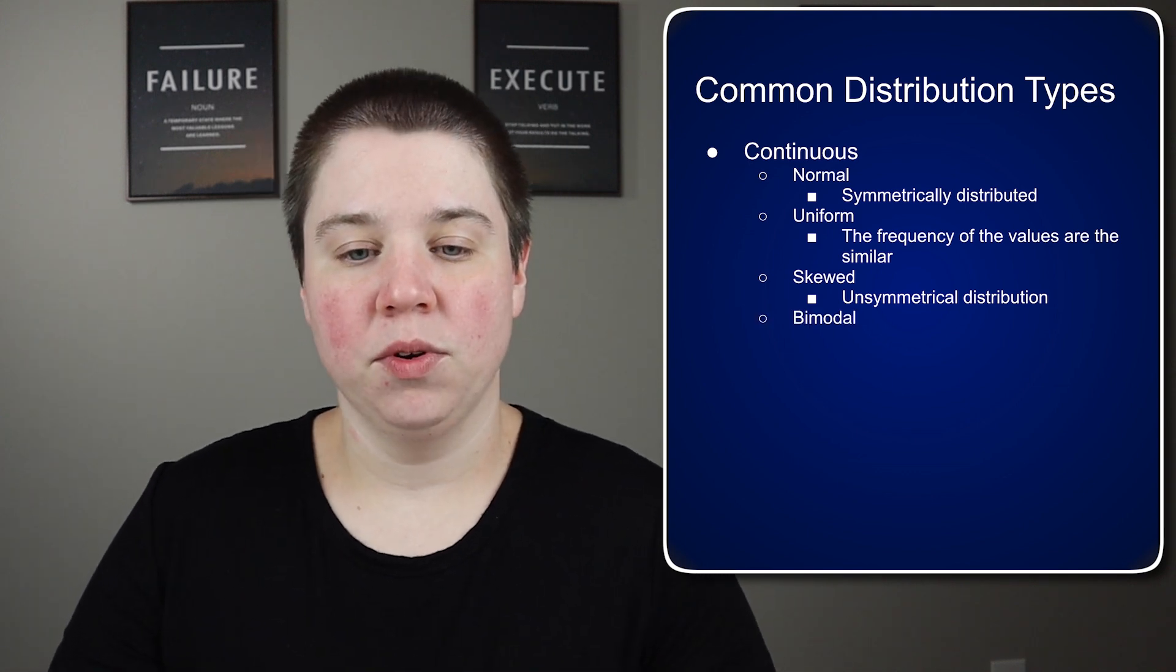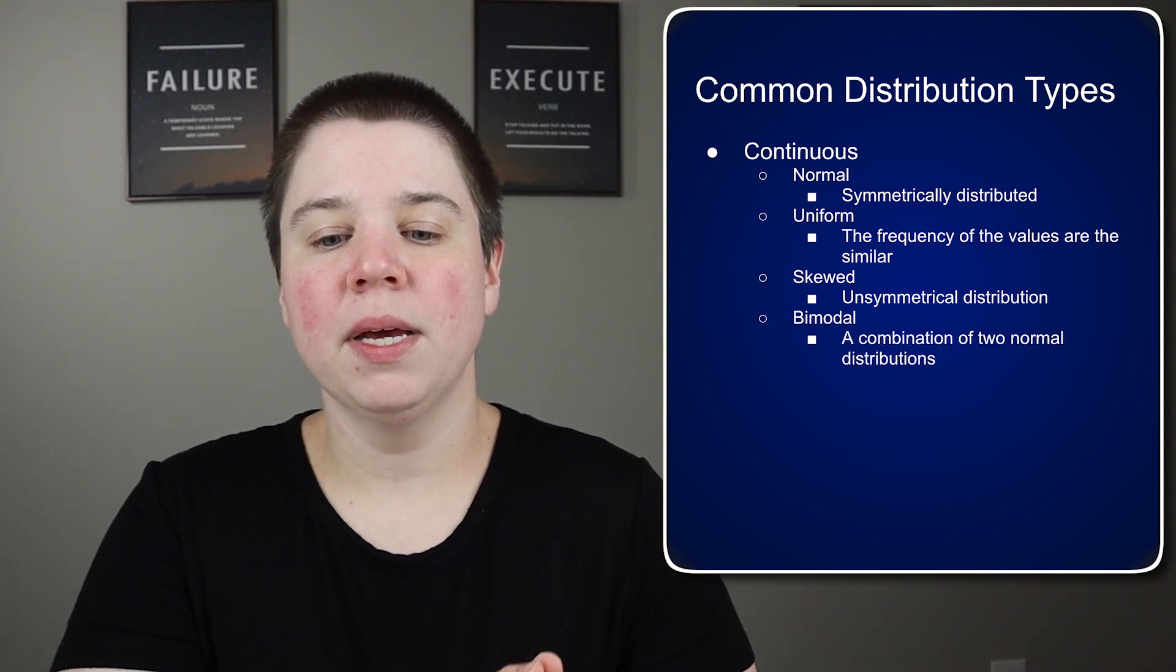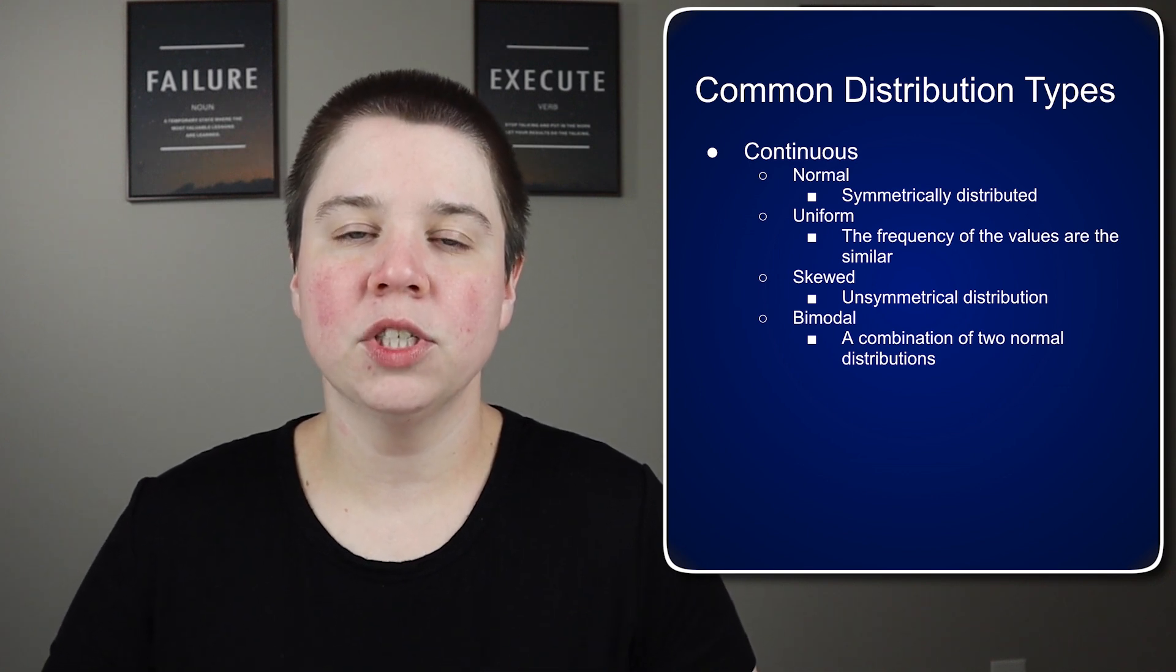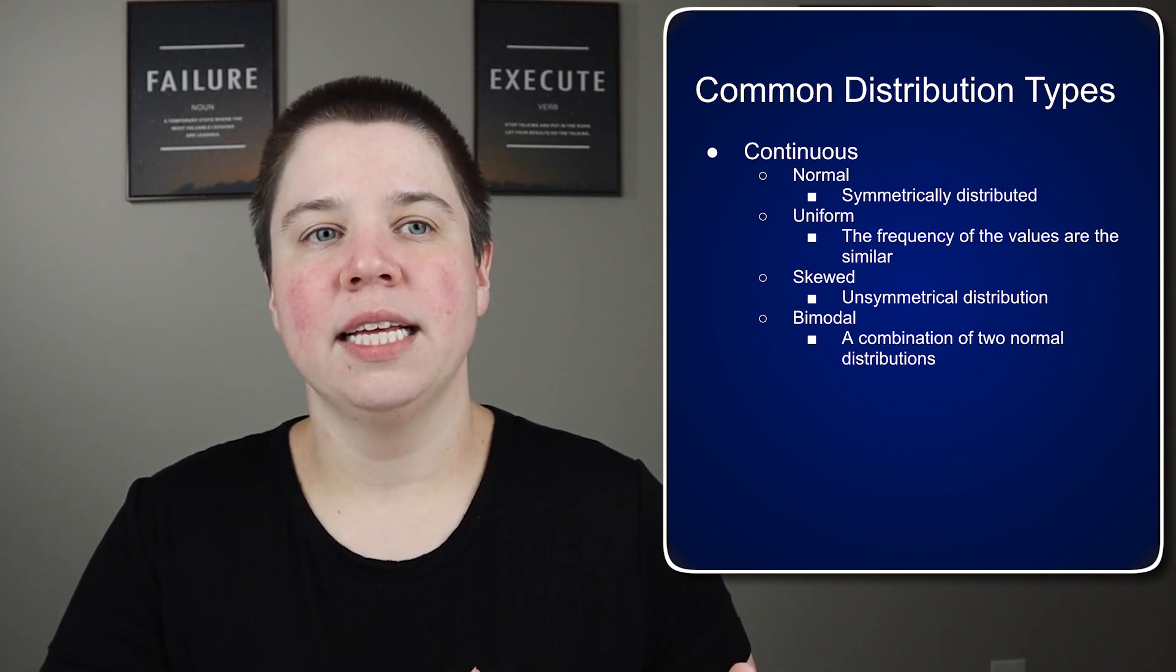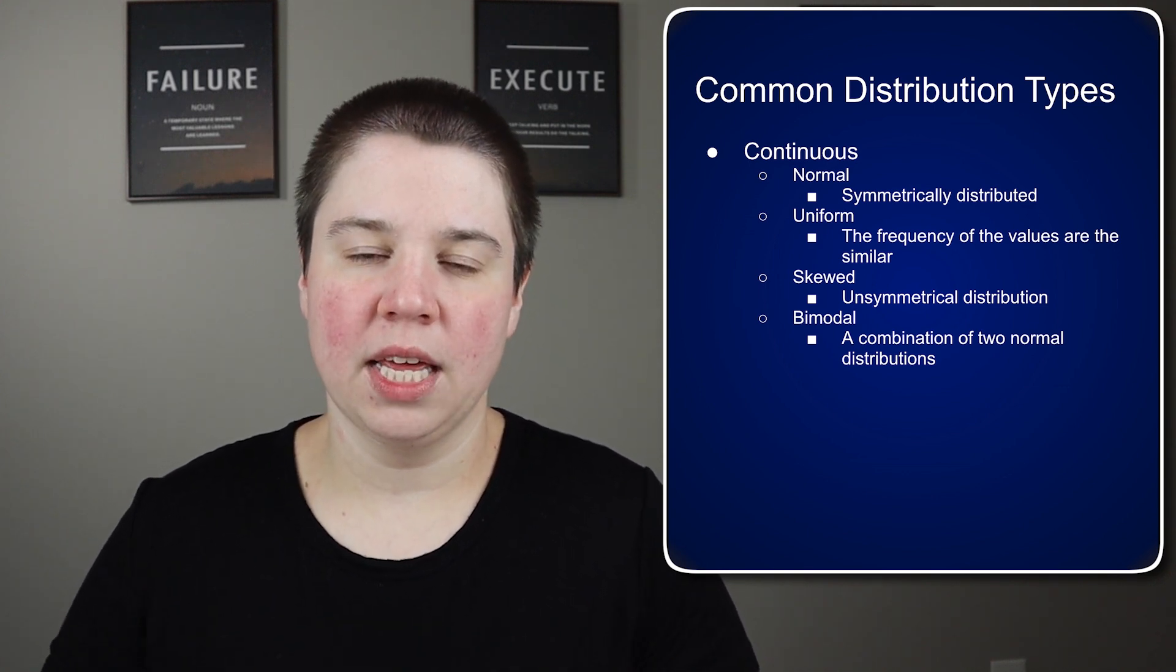We can also get bimodal distribution, and this is typically a combination of two normal distributions. So what you get is basically two peaks within your distribution.